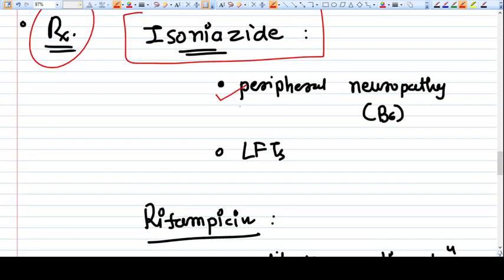Isoniazide is a first-line drug. The side effects of this drug are peripheral neuropathy and liver function deterioration. The peripheral neuropathy is due to demyelination, so because of demyelination, peripheral neuropathy will be there. But it can be prevented with the use of pyridoxin, vitamin B6. It can also cause some liver enzyme elevations, so if the person is receiving isoniazide, monthly LFTs can be done.